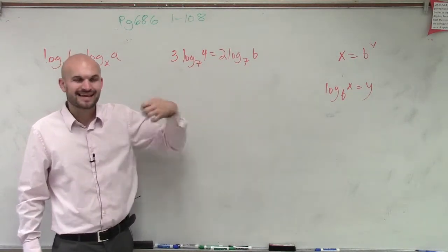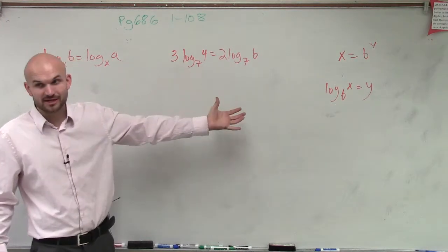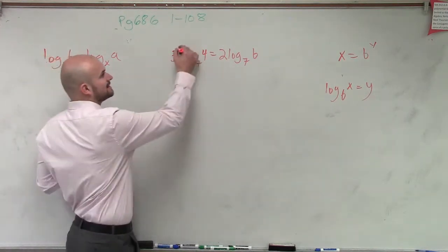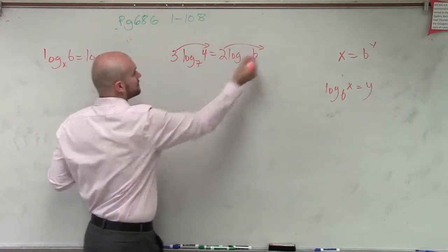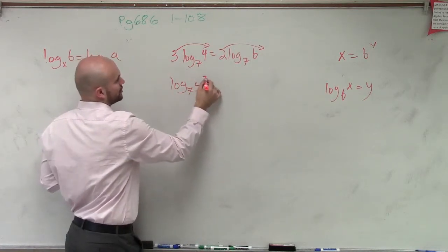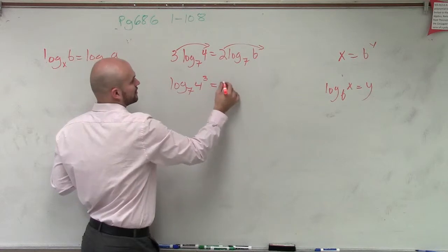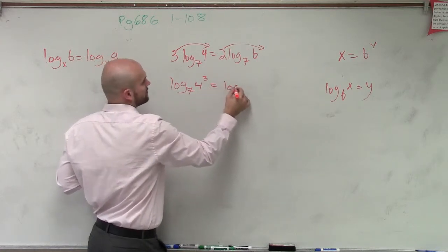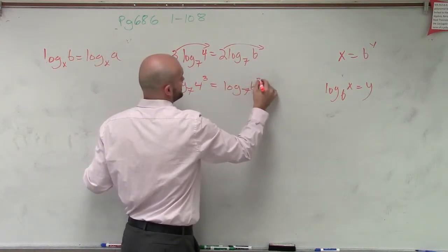However, Chase, if I apply my product property of logarithms, I can now rewrite these as log base 7 of 4 cubed equals log base 7 of b squared.